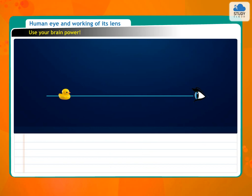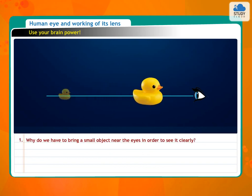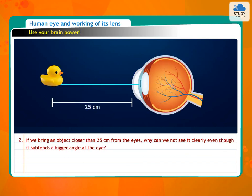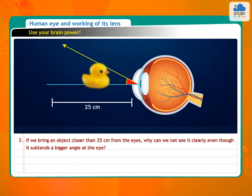Use your brain power. 1. Why do we have to bring a small object near the eyes in order to see it clearly? 2. If we bring an object closer than 25 cm from the eyes, why can we not see it clearly even though it subtends a bigger angle at the eye?